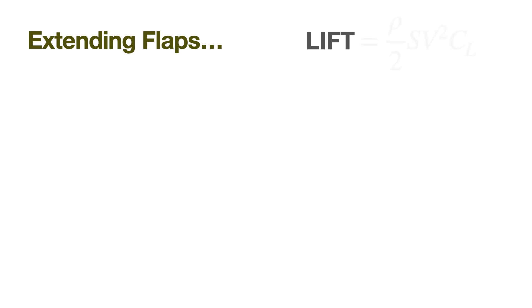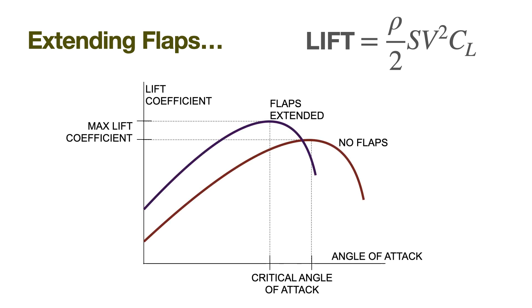Lift is a function of air density rho, wing area S, velocity V, and coefficient of lift, which is determined by the airfoil design. Extending flaps downward creates a higher possible lift coefficient, and for some designs, a greater wing area. Incidentally, it also lowers the critical angle of attack.